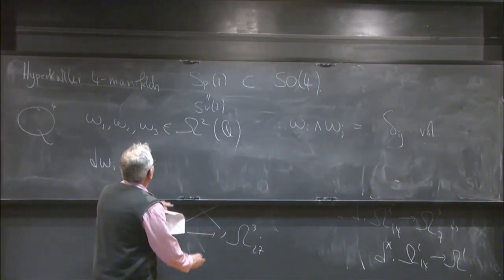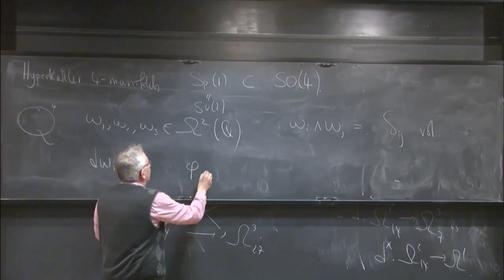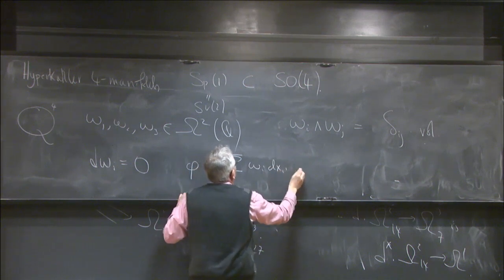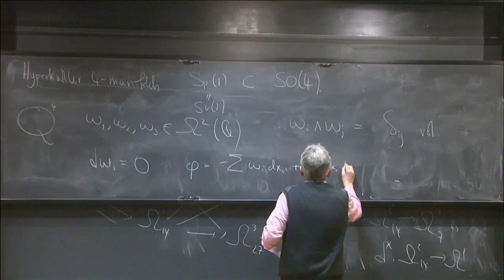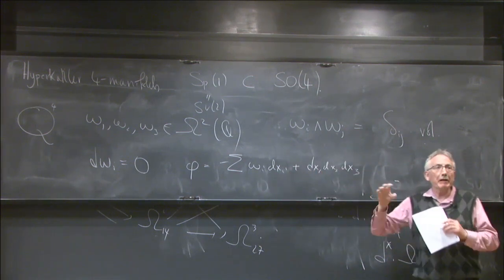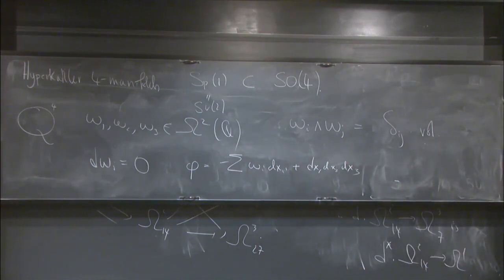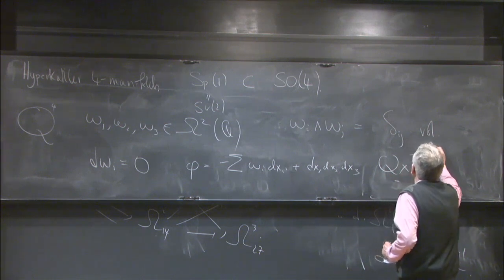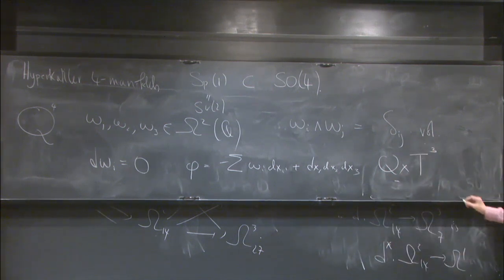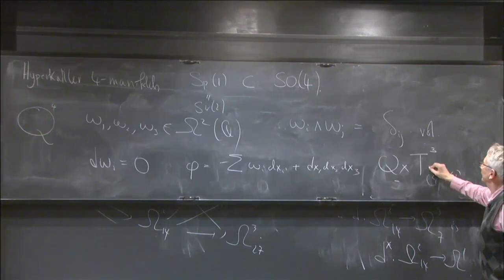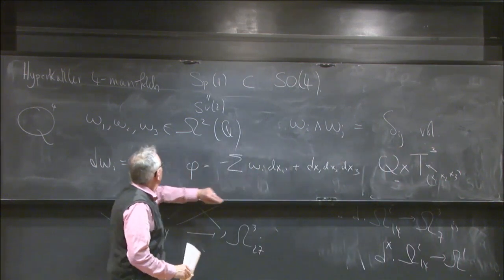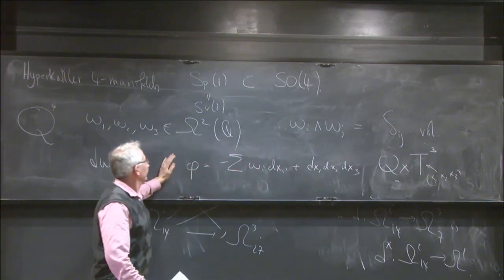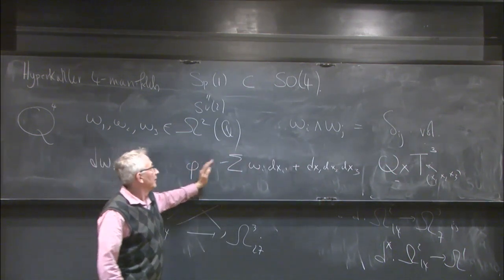Our basic model for our 3-form was phi = minus the sum of omega_I wedge dx_I + dx1 wedge dx2 wedge dx3. When we introduced this in the linear algebra context, just the same formula applies to Q times the 3-torus. So if we take x1, x2, x3 to be standard coordinates on our 3-torus, then omega_I, omega_II, omega_III are a triple of 2-forms on the Q component, and this same formula defines a G2 holonomy structure on this product.